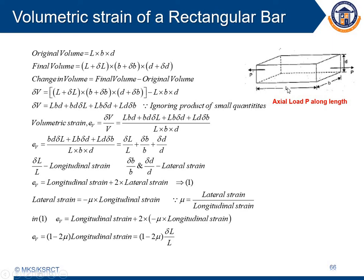After the application of force, the length will increase by delta L, meanwhile the breadth will decrease by delta B and depth will decrease by delta D. The final volume will be (L + δL)(B + δB)(D + δD). The change in volume is the final volume minus the original volume: (L + δL)(B + δB)(D + δD) minus L·B·D. We can neglect the delta-squared terms since delta values are very small, so the remaining expression becomes BD·δL + LB·δD + LD·δB.